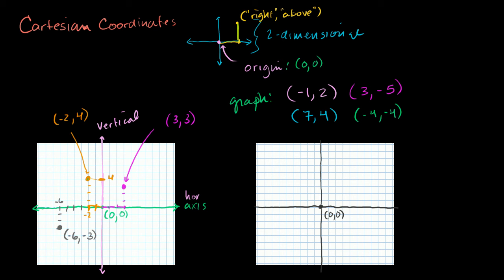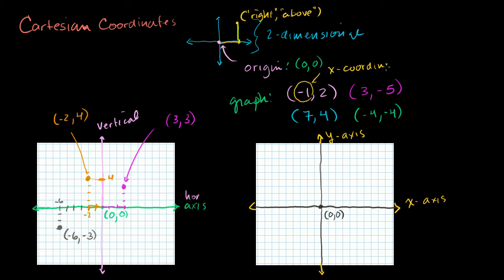One little side note: the horizontal axis is often called the x-axis, and the vertical axis is often called the y-axis. This is just a convention, because the first coordinate — how far you're going in the horizontal direction — is called the x-coordinate, and the second number — how far you go in the up or down direction — is your y-coordinate. Normally you say coordinates are x comma y.